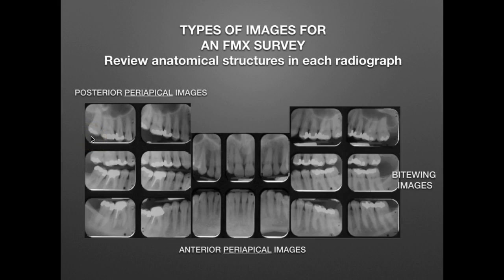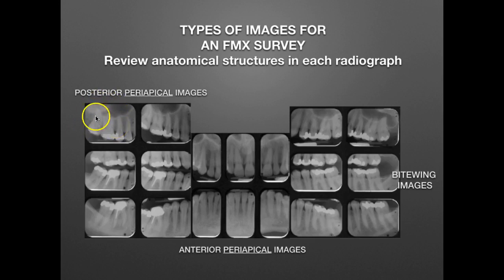Let's look at this upper right maxillary periapical image. The word periapical means around the apical area or apex, so a dentist wants to see the entire tooth from the apex to the crown and the surrounding area. In this particular molar periapical image we see the molars, a little bit of the maxillary tuberosity, and around the apical area, even capturing some of the maxillary sinuses. The image receptor could have been moved a little more mesial to capture more of the maxillary tuberosity.